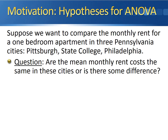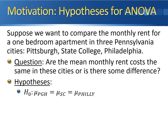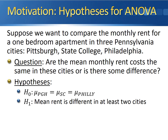Going back to our example of comparing the rent costs in Pittsburgh, State College, and Philadelphia, the first thing we need to do is set up the hypotheses. Since we're comparing three populations, we'll have three population means in the null hypothesis. The null hypothesis says that the mean rent cost in Pittsburgh equals the mean rent cost in State College, which also equals the mean rent cost in Philadelphia. The alternative hypothesis says that the mean rent is different in at least two of these three cities.